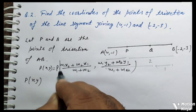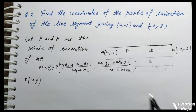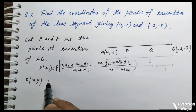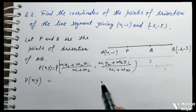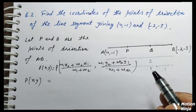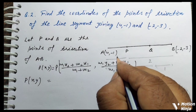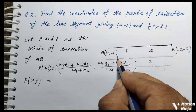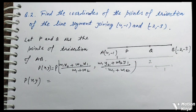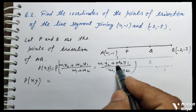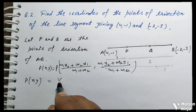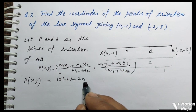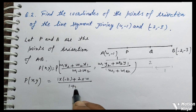Point P को find out करते हैं। Ratio 1:2 है, so M1 = 1 और M2 = 2 (AP = 1, PB = 2)। x-coordinate of P: M1·x2 + M2·x1 / (M1 + M2) = (1 × (-2) + 2 × 4) / (1 + 2) = (-2 + 8) / 3.